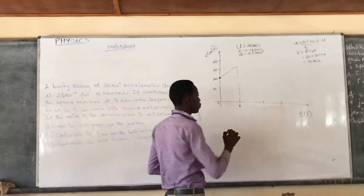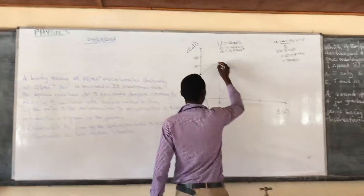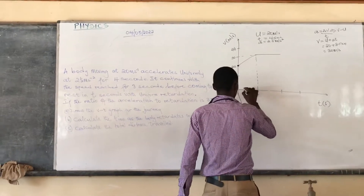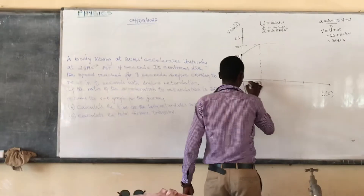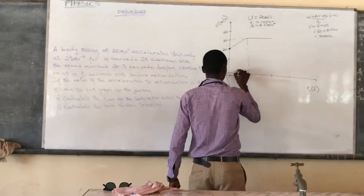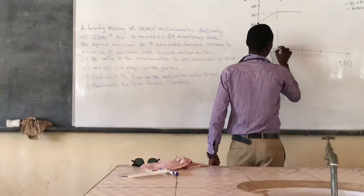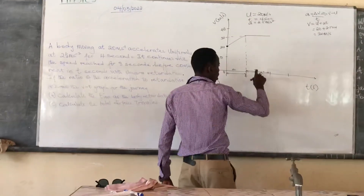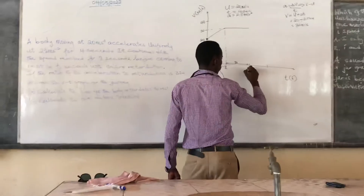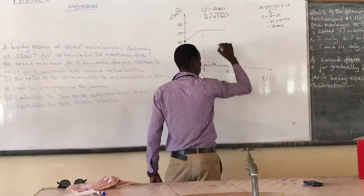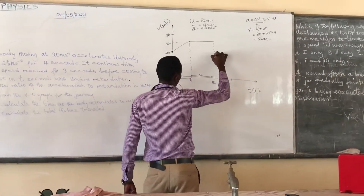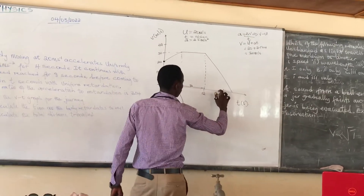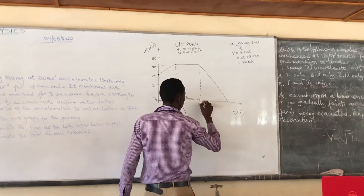After the first 4 seconds, the body maintains that velocity of 30 meters per second for 8 seconds. This second interval is 8 seconds long. Adding 8 onto 4 gives us 12 seconds total elapsed time. After that, the body undergoes retardation and is brought to rest.